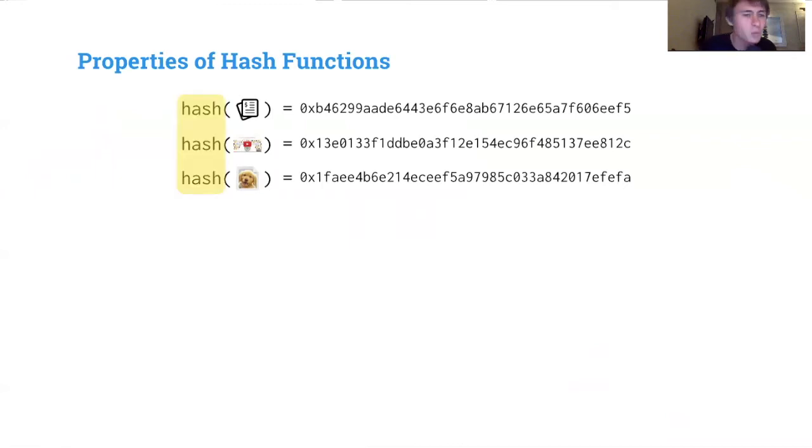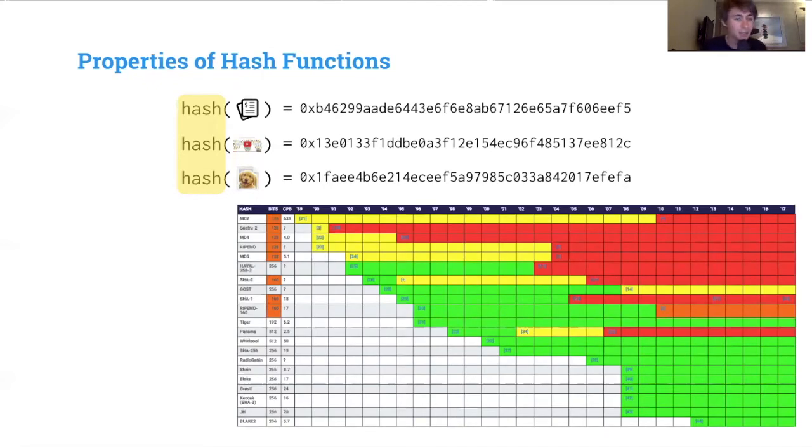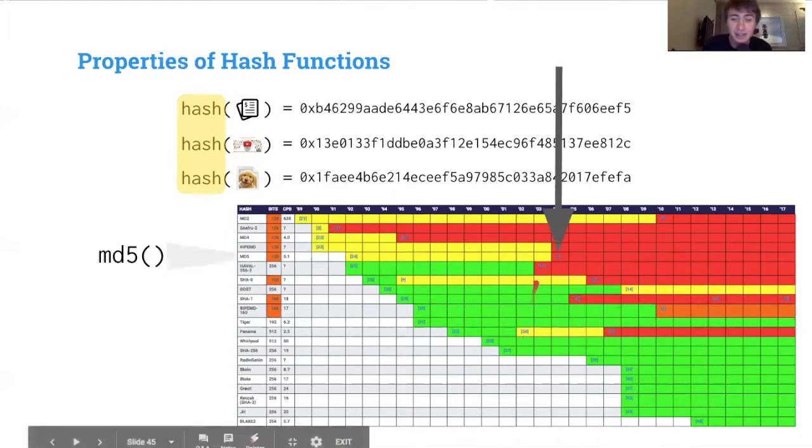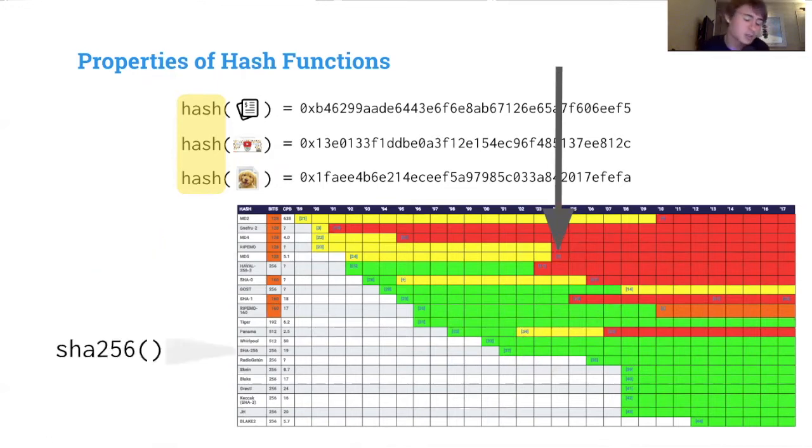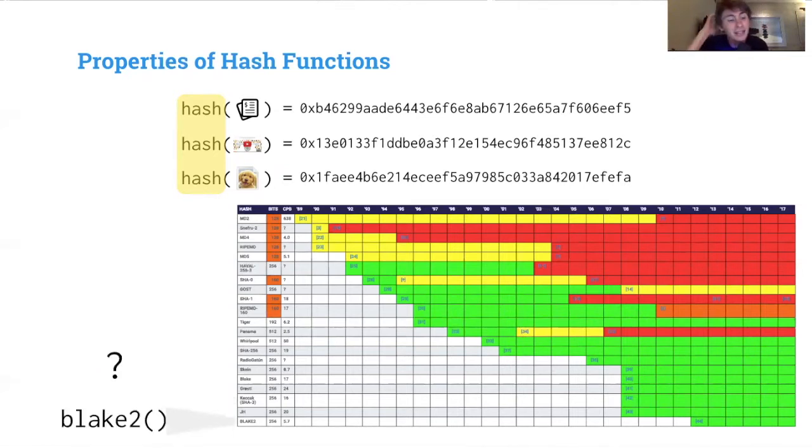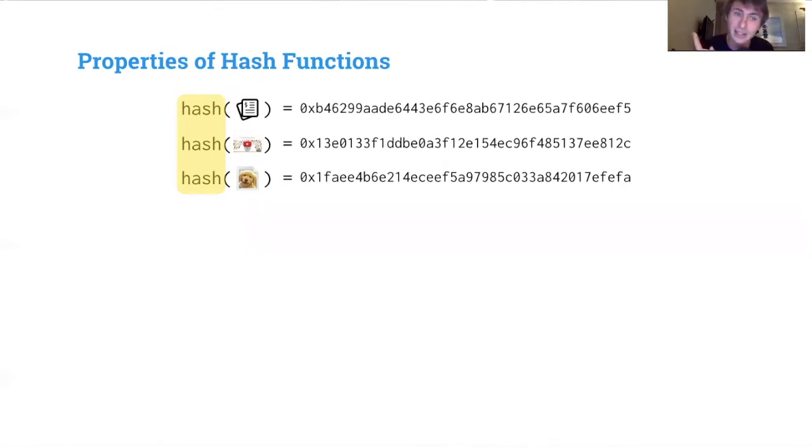But first, let's talk about what these actual hash functions are, because there's quite a large number of them. This is just a small sampling. The first one is MD5. You'll notice this red box came up here. In about 2004, there was a hash collision that was found, which is no good. So we don't use that one. Instead, we use SHA-256 for Bitcoin and Keccak for Ethereum. Blake2 maybe will be used in the future. There's a lot of really cool hash functions, but don't make your own unless you know what you're doing.